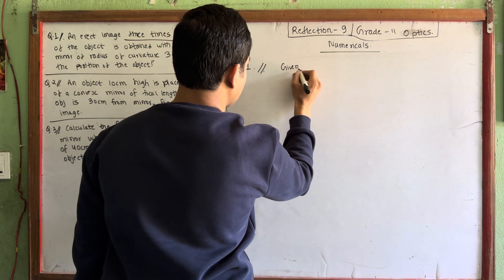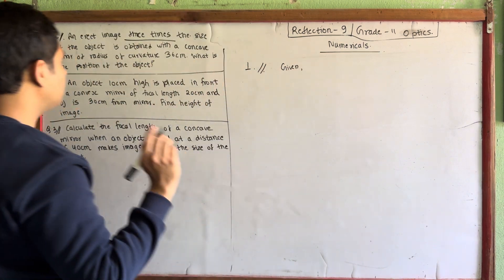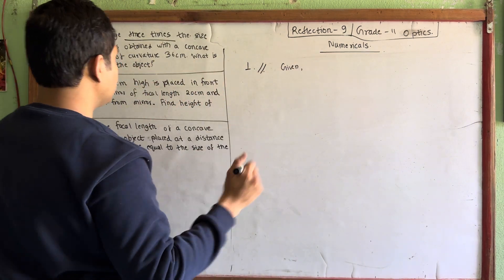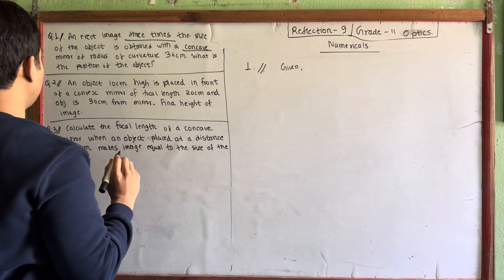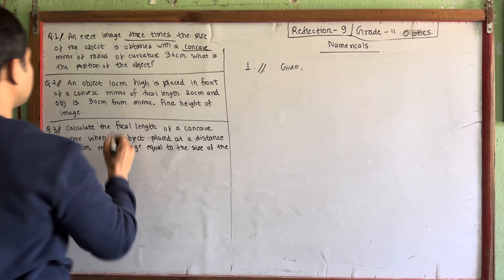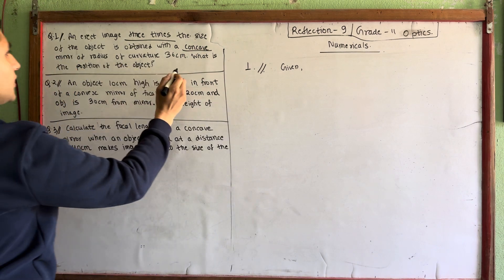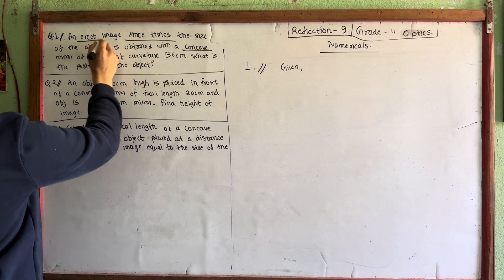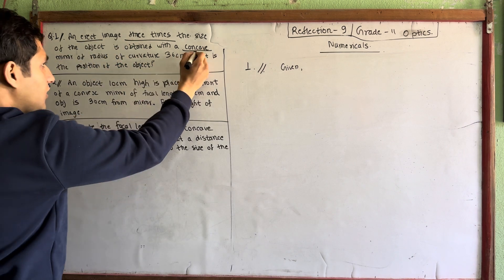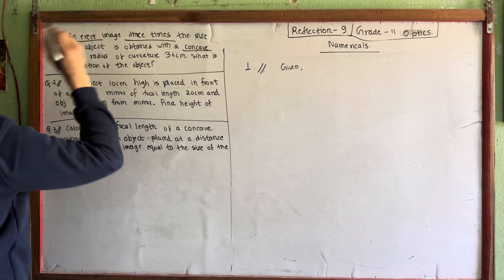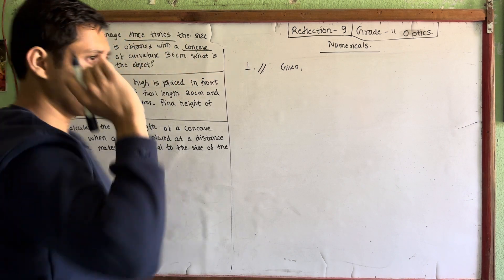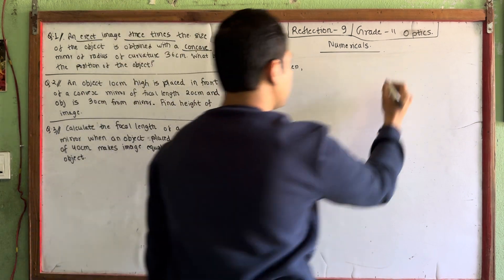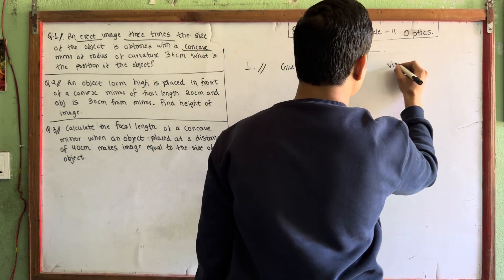So, given. It is a virtual image. It is a concave mirror. The image is erect. So, it is a concave mirror and the image is erect, which means it is a virtual image.